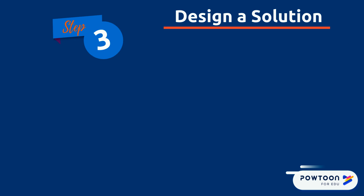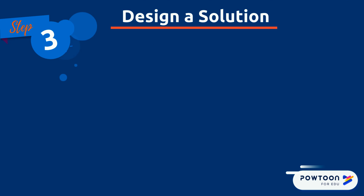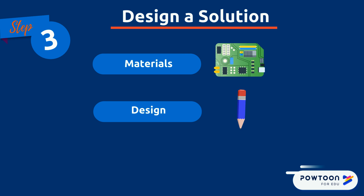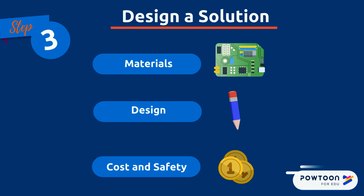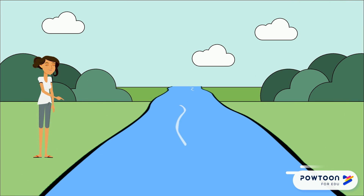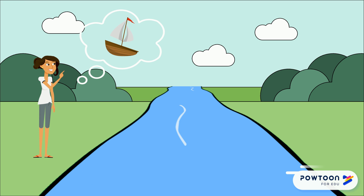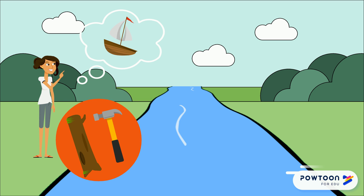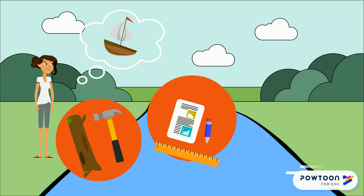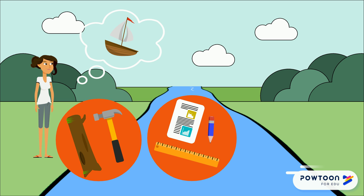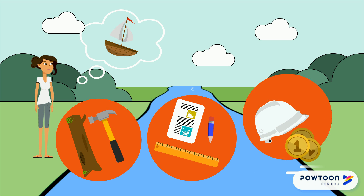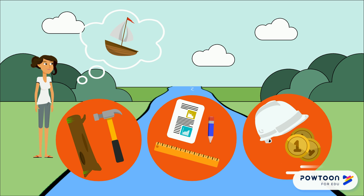Step three is designing a solution. In this stage, you need to select one of your ideas, or combine multiple from the brainstorming stage, but you need to be realistic. You need to think about the materials you'll need, creating a design, and even the cost and safety of the materials you're using. Maddie decides to go with the idea of the boat. During the design phase, she'll have to think about the kind of materials and tools she'll need, draw out her design with paper and pen, use a ruler to check measurements, and think about safety and how to gather materials for the build.